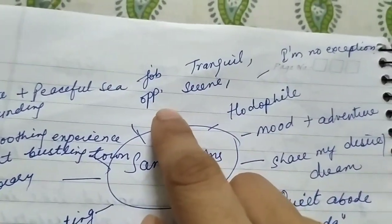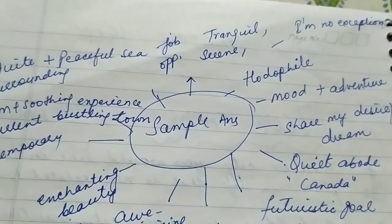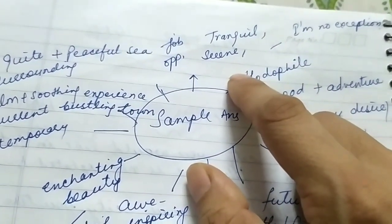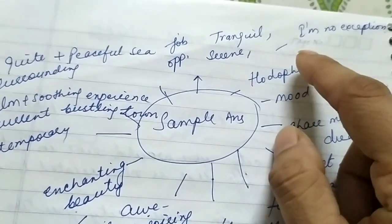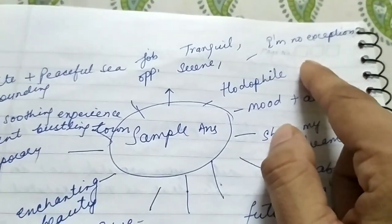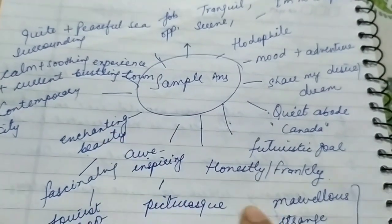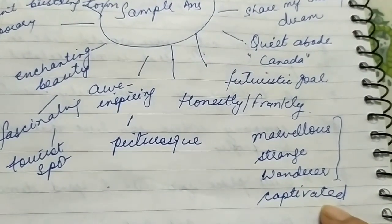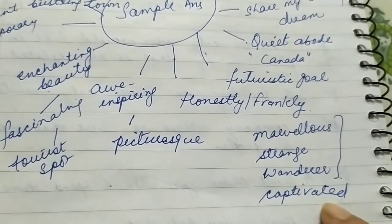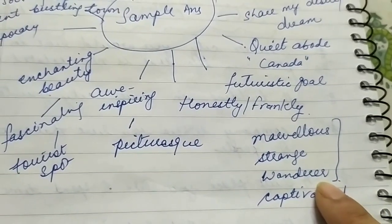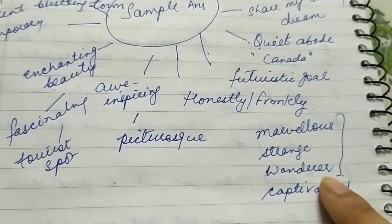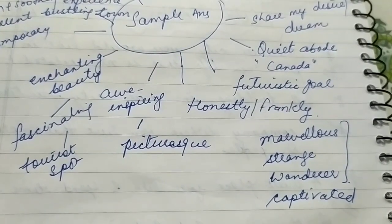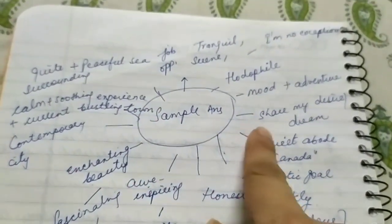Aur wahaan pe job opportunities bhi zyada hain — aur agar aap job opportunities ya company ke baare mein bolte ho, toh yeh wali chizein keh sakte hain: yeh tranquil place hai, serene place hai. Aur sabhi aise chizhe dhundte hain — everybody looks for these kinds of places and you are no exception, matlab aap bhi unhi mein count hote hain. Aap yeh sare words use karenge plus yeh bhi bol sakte hain ki you are captivated — captivated matlab aap attract hue, mohit hue, mesmerized hue us cheez ko dekhke. You are a wanderer — wanderer matlab aap ghumte ho, explore karte ho chizein. Wahaan ki chizein kaisi thi — strange thi ya phir marvelous thi, kaisa tha aapka overall experience. Aay yeh sare ke sare words aapko help karenge.